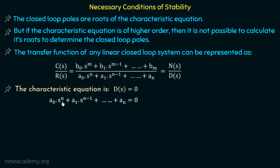This is an nth-order characteristic equation, so it will have n different roots, meaning n closed-loop poles. For example, if n equals 8, it will be an 8th-order equation and we would need to calculate 8 different roots. But with the RH criteria, we can comment on the stability without solving the characteristic equation to find its roots.